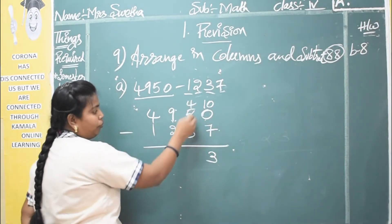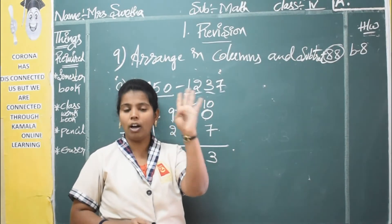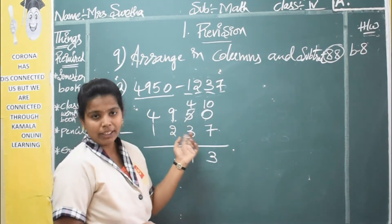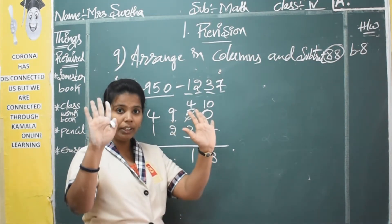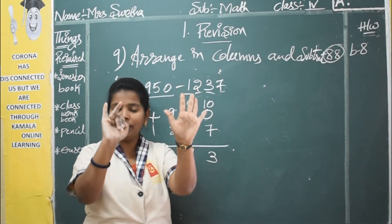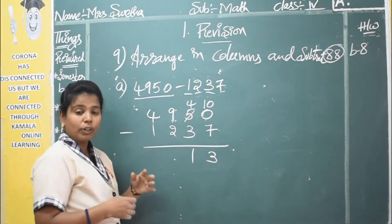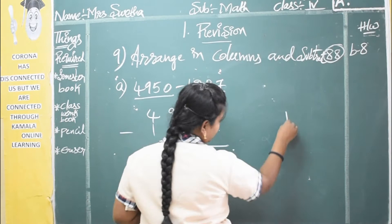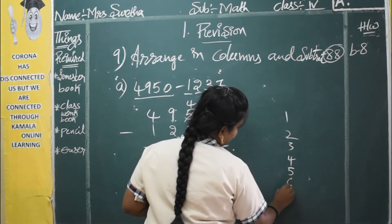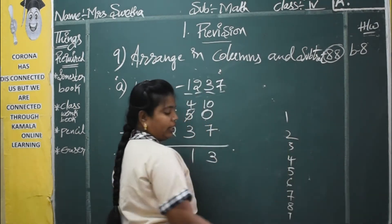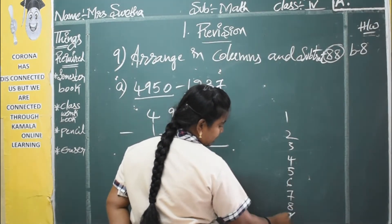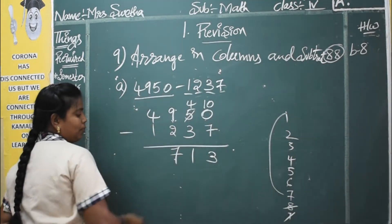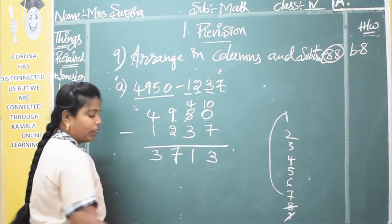Now 4 minus 3 — from 4 you can take out 3, so 1 is left. Then 9 minus 2: take out 9 fingers and close 2 fingers, and 7 are left. You can also count back: from 9, go back 2 numbers — nine, eight, seven — so 7 is the answer. Then 4 minus 1 is 3.